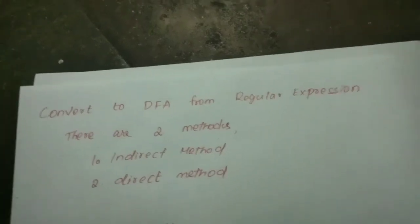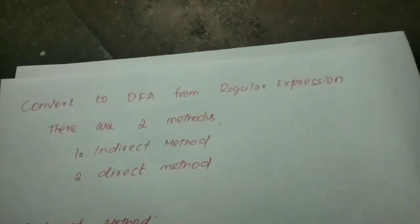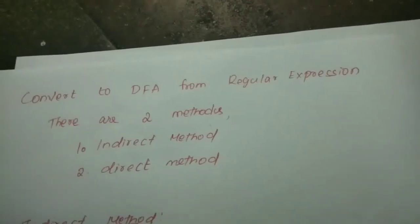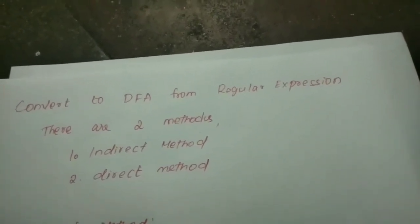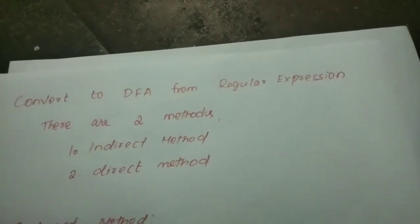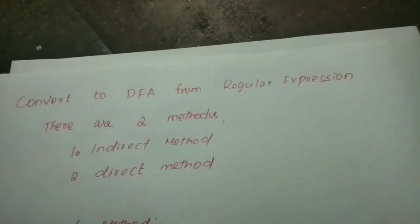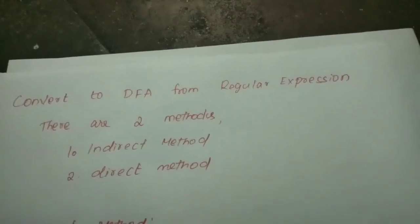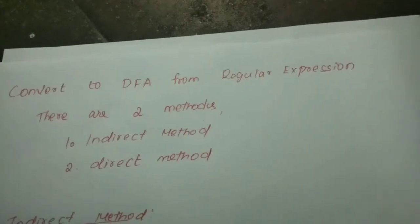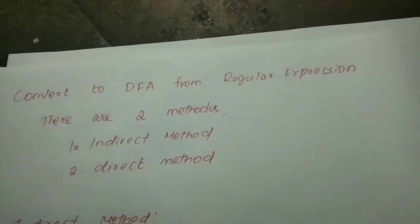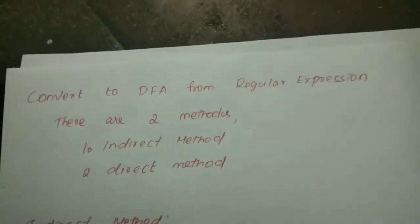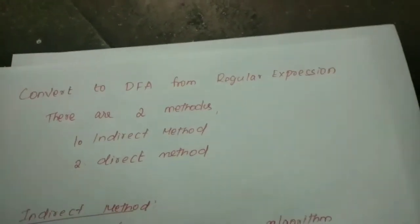Today we are going to see the topic about conversion to DFA from a regular expression. When a regular expression is given, we have to find out a deterministic finite automata. There are two methods to convert to DFA from a regular expression. The first method is called the indirect method and the second method is called the direct method.